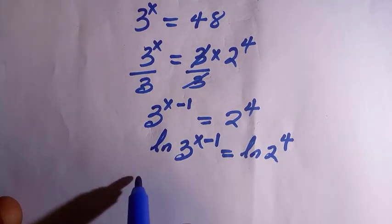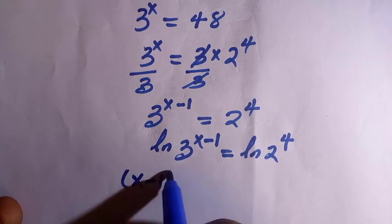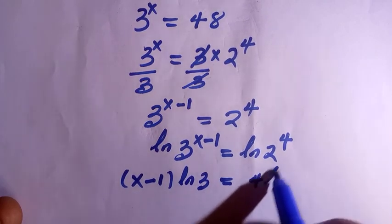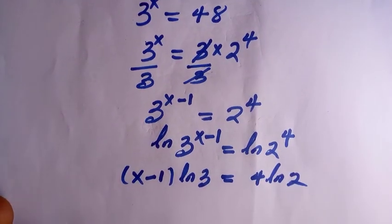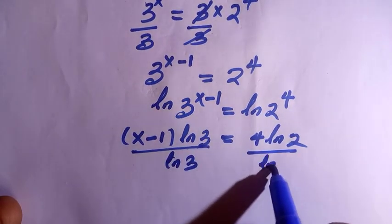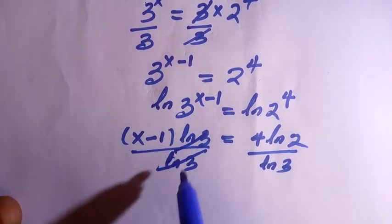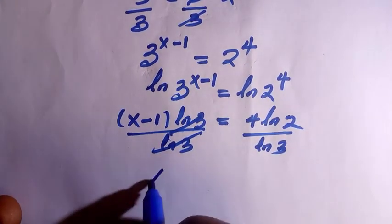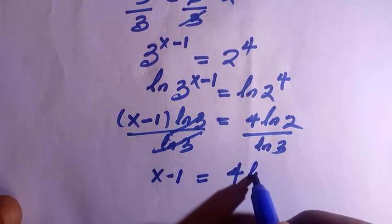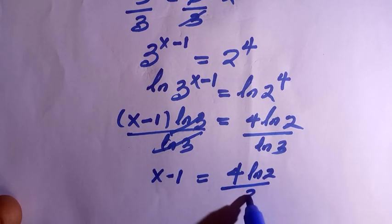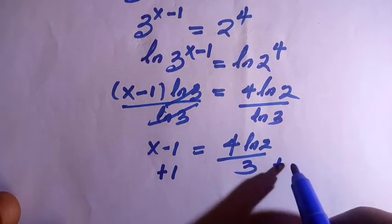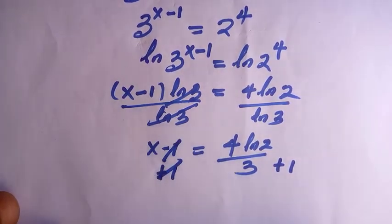And this x minus 1 will come down, then we have (x minus 1) bracket ln of 3 equals to 4 ln 2. Then we divide by ln of 3, so we want to have x minus 1 separate. We have x minus 1 equals to 4 ln 2 divided by ln 3. By adding 1 to both sides, we have these two cancelled.